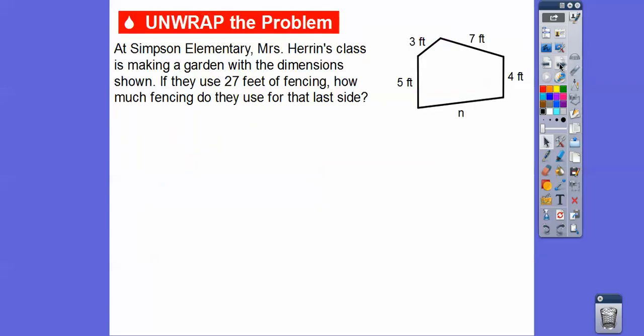So each one of these are going to give us a perimeter here. Here's an example. At Simpson Elementary, Mrs. Herron's class is making a garden with the dimensions shown. So she's going to make this garden right here, and 5 feet, 3 feet, 7 feet, 4 feet, and N feet. We don't know what this side length is. So if they use 27 feet all the way around, how much is this for N, for this last leg right here?